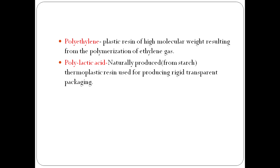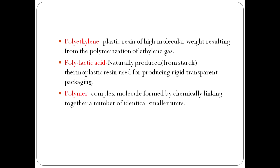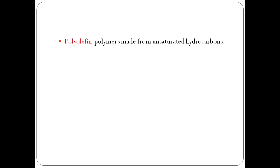Polylactic acid is a naturally produced biodegradable material derived from starch. It is a thermoplastic used to produce rigid transparent packaging material. A polymer is a complex molecule formed by chemically linking together a number of smaller units called monomers. In packaging, several polymer types are used — polyester, polyfilm, polycarbonate, polyethylene, polypropylene — so understanding simple definitions is useful.